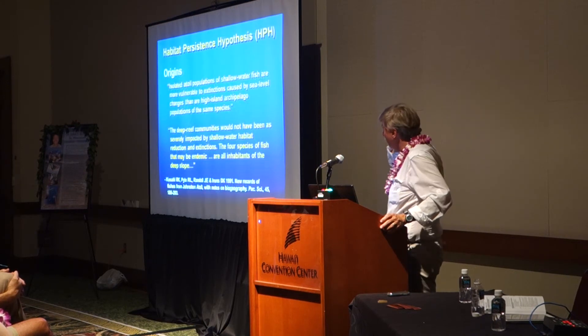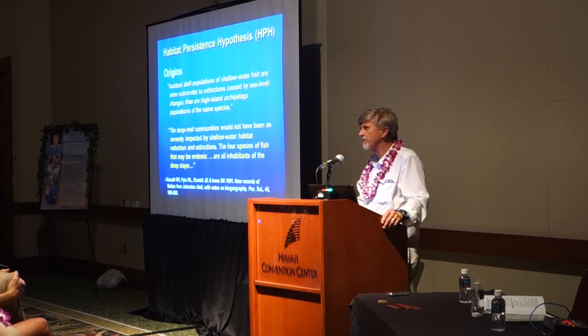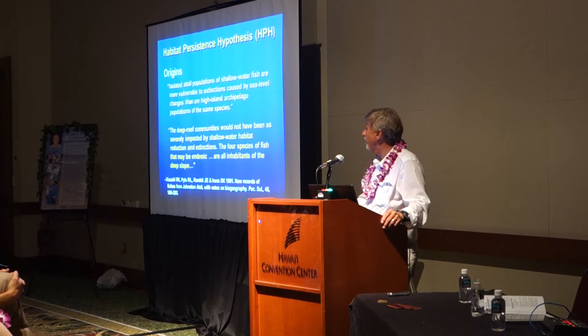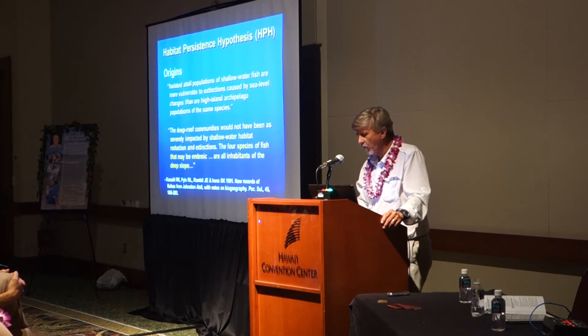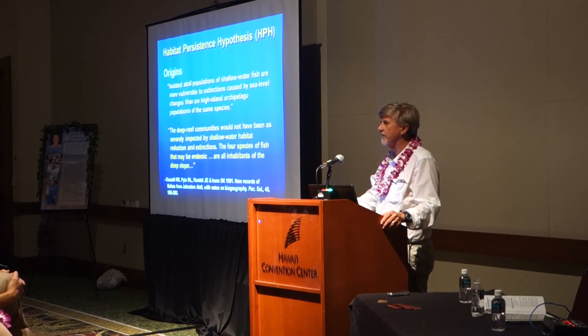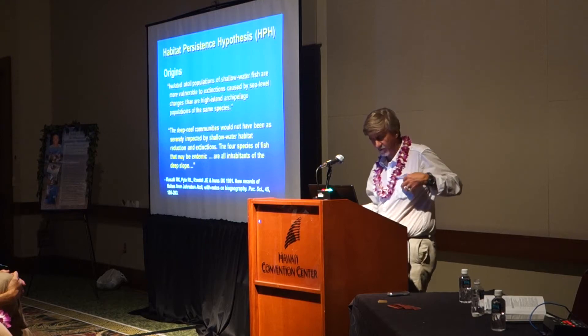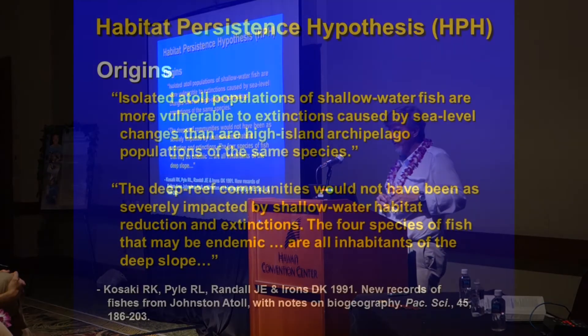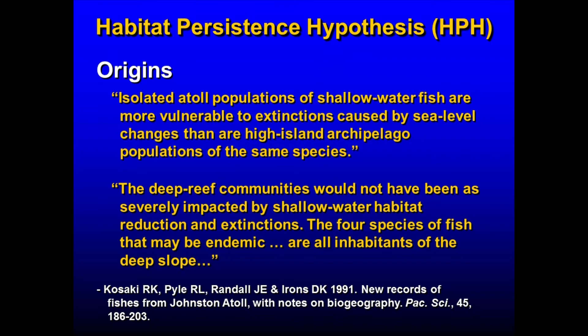This led to more head-scratching. We developed some general ideas starting in the late 1980s about what might explain this. The first time this was published was in Kosaki et al., 1991, where we touched on the basic principles of this hypothesis. We pointed out that isolated atoll populations of shallow water fish are more vulnerable to extinctions caused by sea level changes than are high island archipelago populations of the same species.